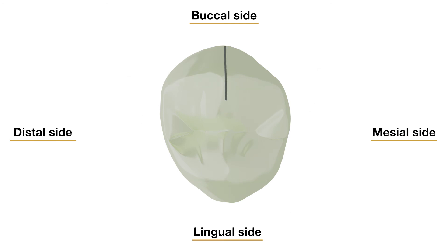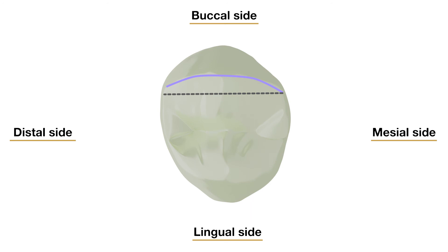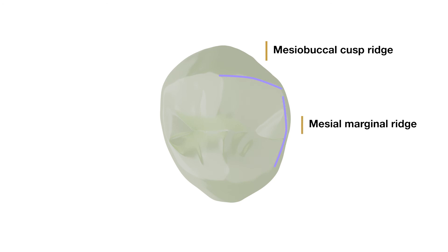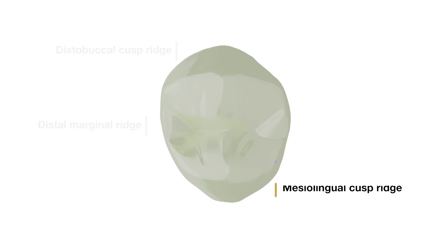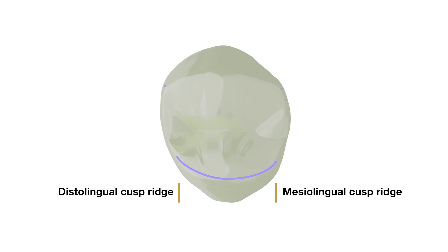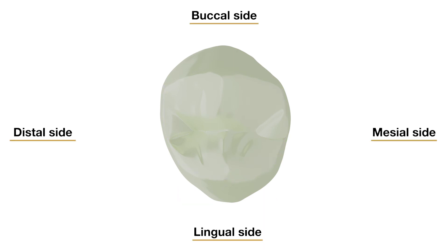The buccolingual dimension of the crown is much greater than the mesiodistal dimension, and the distobuccal cusp ridge is buccal to the mesiobuccal cusp ridge. The angle formed by the convergence of the mesiobuccal cusp ridge and the mesial marginal ridge approaches a right angle. Compared to that, the angle formed by the convergence of the distobuccal cusp ridge and the distal marginal ridge is acute. The mesolingual and distolingual cusp ridges are confluent with the mesial and distal marginal ridges. These cusp ridges are curved following a semicircular outline from the marginal ridges to their convergence at the tip of the lingual cusp. From this aspect, more of the buccal surface of the crown is seen than of the lingual surface.